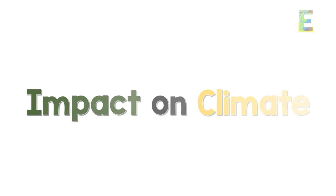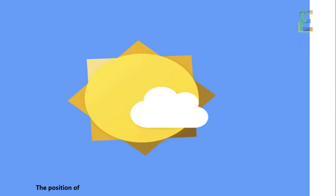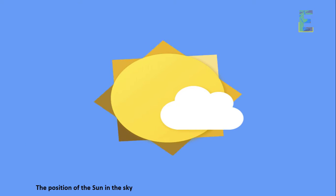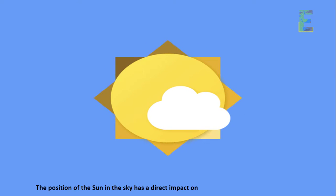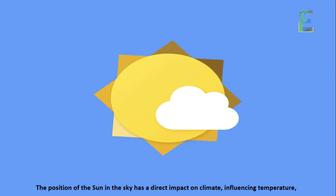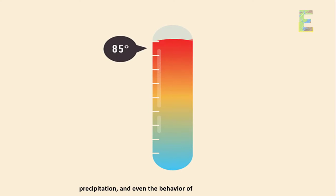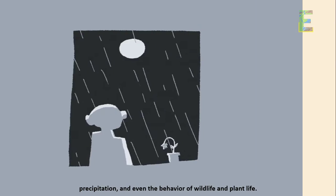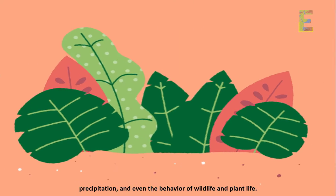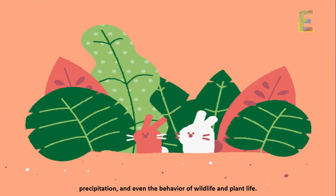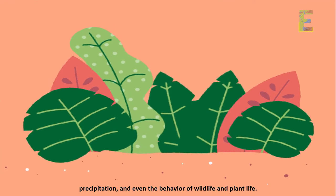The position of the sun in the sky has a direct impact on climate, influencing temperature, precipitation, and even the behavior of wildlife and plant life.